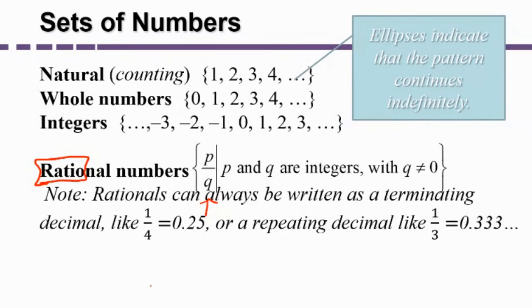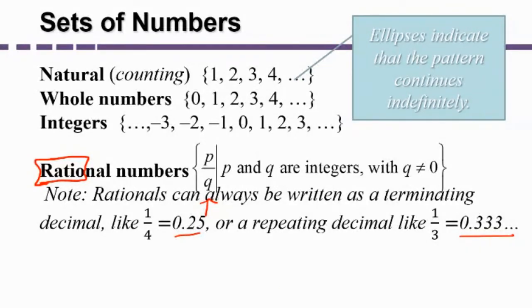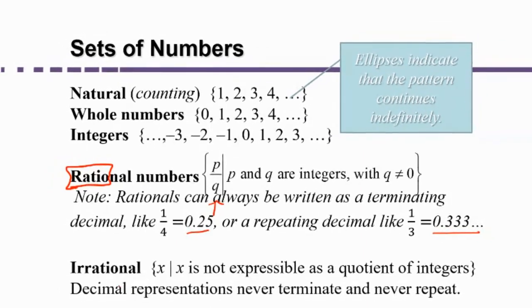Rational numbers have the property that if you write them as a decimal, they're going to either terminate like one fourth is equal to 0.25. It stops after two decimal places. Or they're going to repeat like one third is 0.333 forever. There are also decimals that don't have the characteristic that they terminate or repeat. These are special numbers called irrational numbers. They're not rational. So they're irrational.